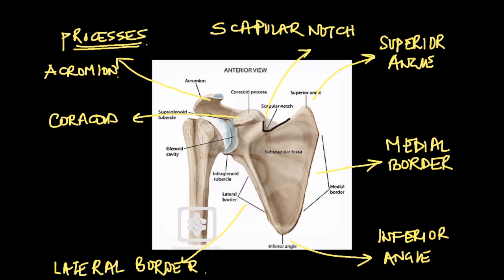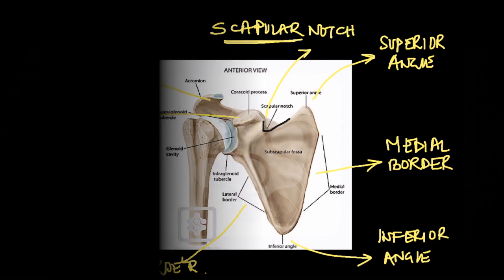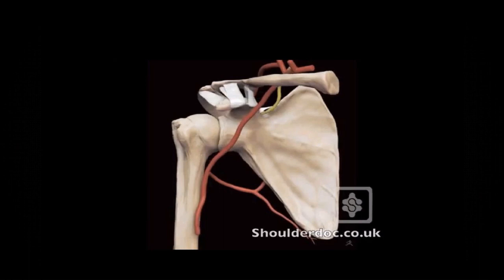What I have drawn here is the scapular notch, or the suprascapular notch. This is a very important notch because the suprascapular nerve passes posteriorly through it to enter the supraspinous fossa. The notch is drawn in black, the suprascapular nerve in yellow, and the suprascapular ligament — also called the transverse scapular ligament — in blue.